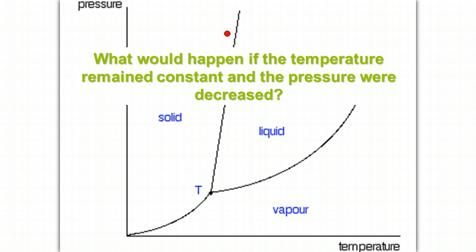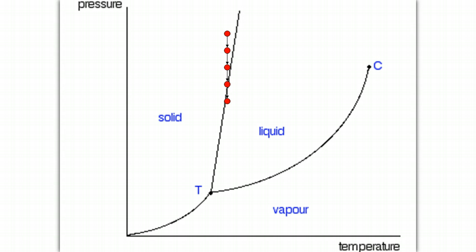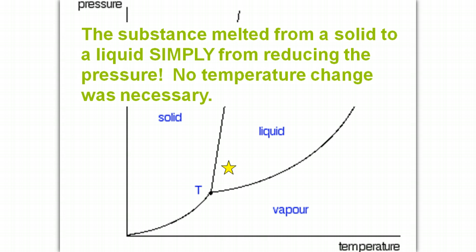What would happen if the temperature remained constant and the pressure were decreased? So we'll keep temperature constant and then we'll decrease the pressure and you'll notice that it changes from a solid to a liquid. If we were to continue to decrease the pressure, it would go all the way down to a gas. The substance ended up melting from a solid to a liquid simply from reducing the pressure. No temperature change was necessary.